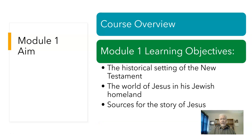The module one aims include a very excellent course overview that you will want to look at — it summarizes the course in this term very well. There are also some important learning objectives: first, the historical setting of the New Testament; second, the world of Jesus in his Jewish homeland; and third, sources for the story of Jesus. When you go online you will see these unpacked very specifically.